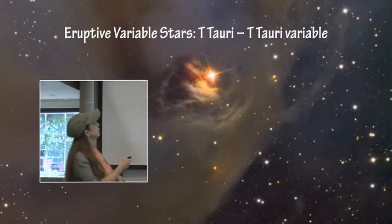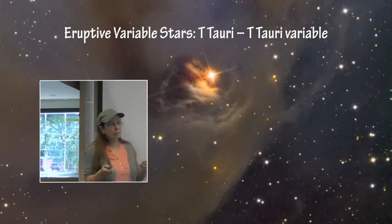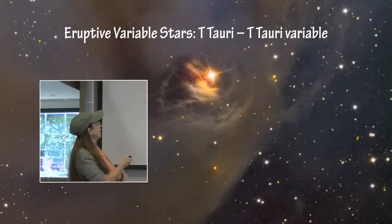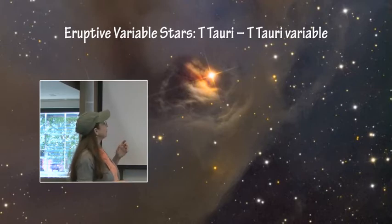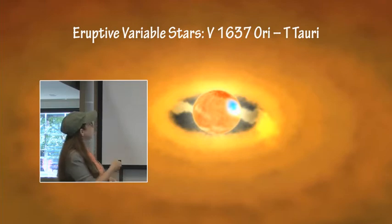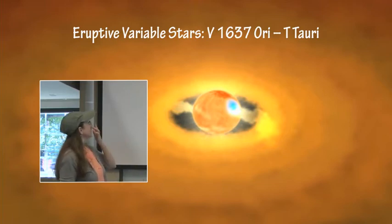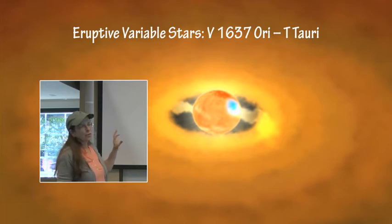The first deep sky object is T Tauri itself, which is a variable star that is a precursor to a Sun-sized main sequence star. They range in mass from approximately 0.2 to 3 solar masses and are found in nascent planetary system regions — a cloud of gas and dust with a very newly forming star. Hydrogen fusion has not stabilized yet, so they are very variable in their output. V1637 Ori is also a T Tauri star, imaged by three X-ray spacecraft: Chandra, XMM-Newton, and Suzaku, providing observational evidence for this being a toddler-phase T Tauri star.